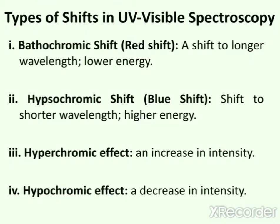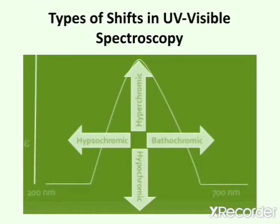Next is the hyperchromic effect. Hypochromic effect is the decrease in intensity of absorption. Now we will understand the types of shifts in ultraviolet visible spectroscopy by this diagram, which shows an ultraviolet spectrum.